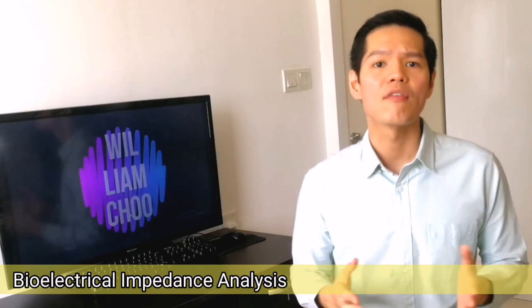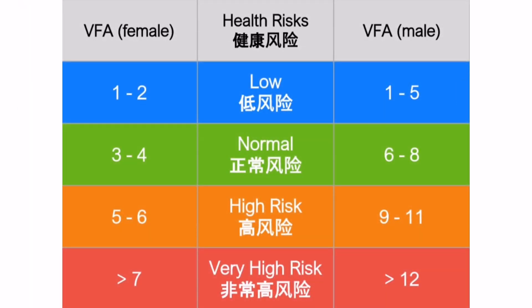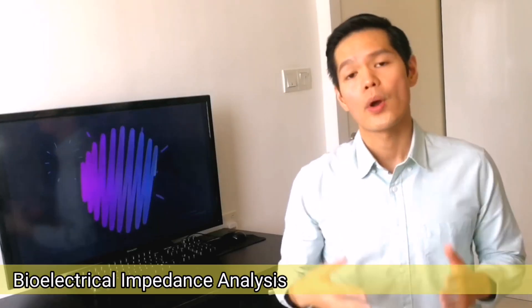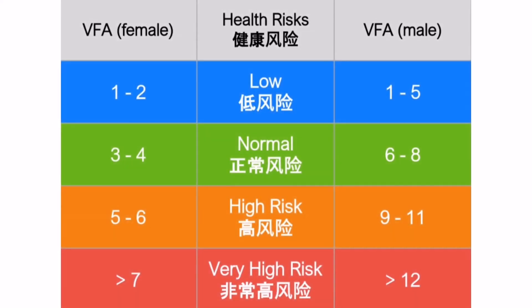For males, a visceral fat level of 1 to 5 equates to low health risk; 6 to 8 is moderate risk; 9 to 11 means high risk; and more than 12 indicates very high health risk. For women, 1 to 2 equates to low risk; 3 to 4 is normal; 5 to 6 is high risk; and anything more than 7 is very high health risk.